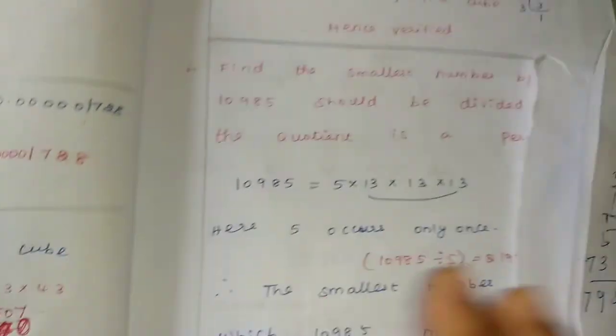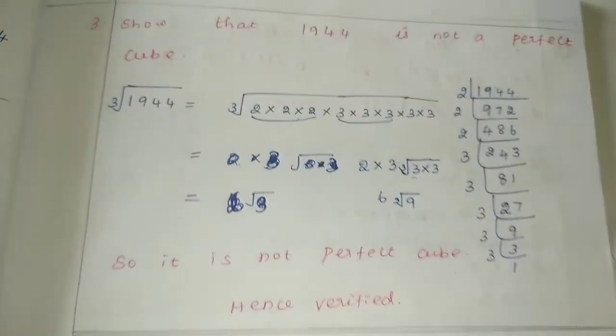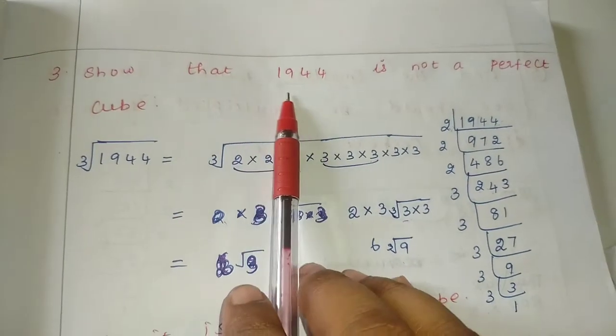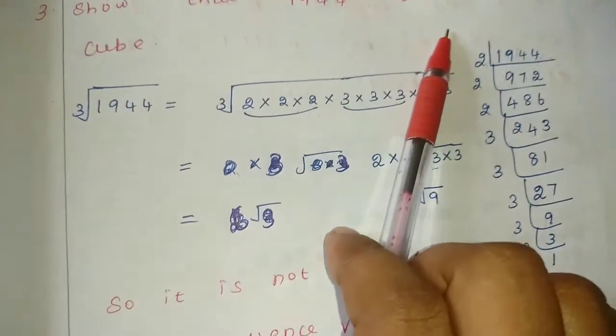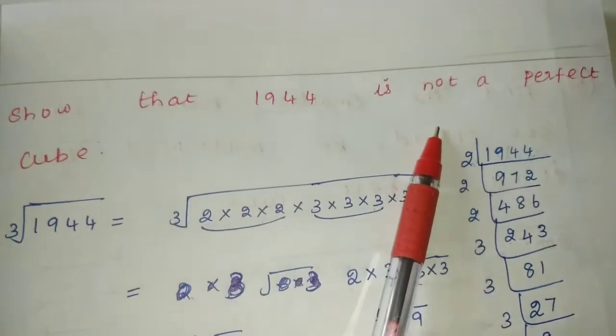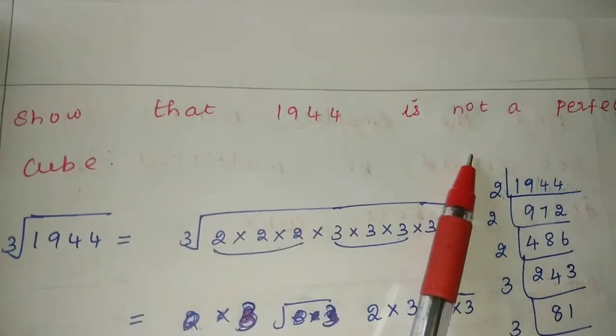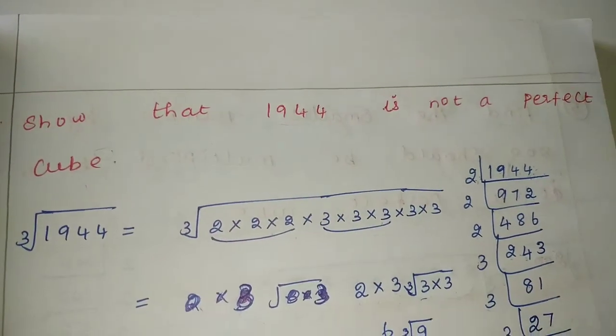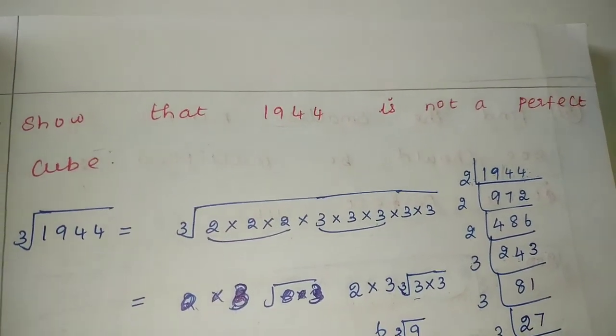Next: show that 1944 is not a perfect cube. So, 1944 is not a perfect cube — what do we do? We use the L method (prime factorization).